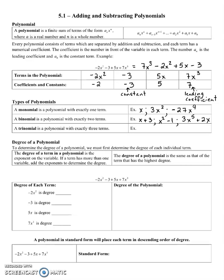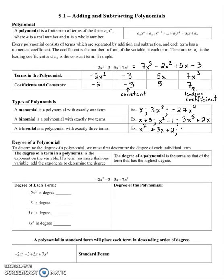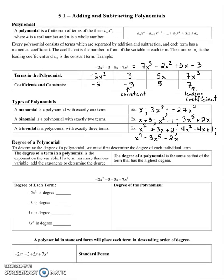Trinomials have three terms — for example, x squared plus 3x plus 2, or 4x squared minus 4x plus 1, or x to the ninth minus 3x to the fifth minus 2x. Those are all examples of trinomials.